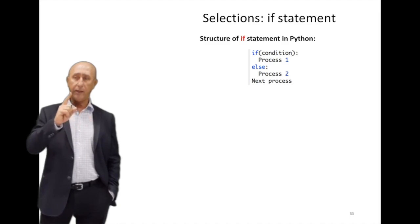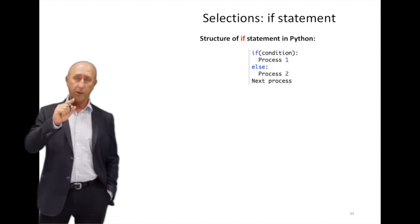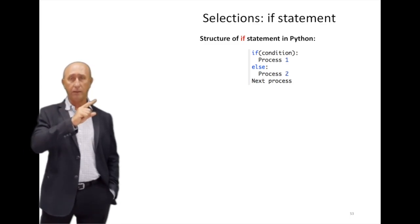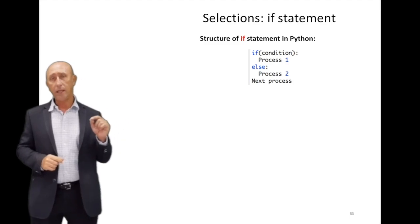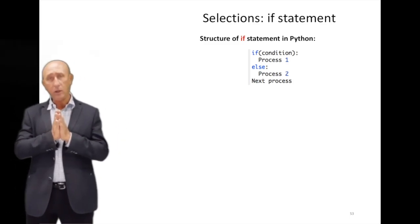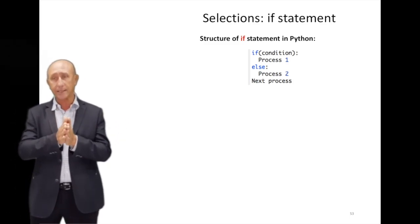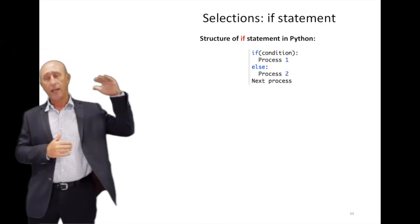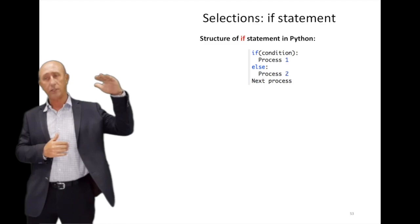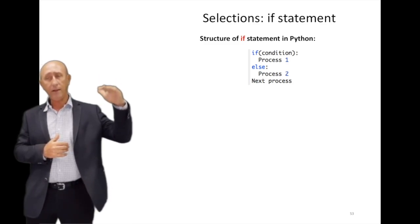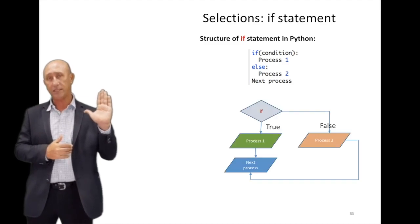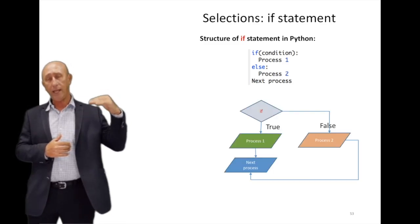How is it done in Python? You have the keyword 'if' and then a bracket — just like the for loop — and then a colon. The condition goes inside these brackets. If that condition is true, it executes everything underneath it that is indented inward — that's part of the if statement.